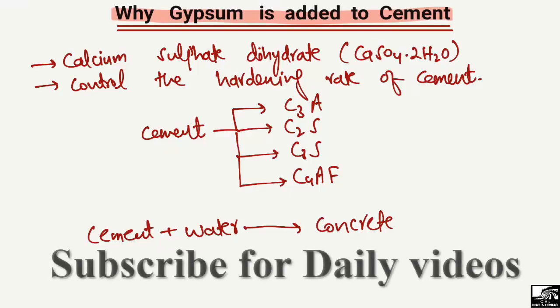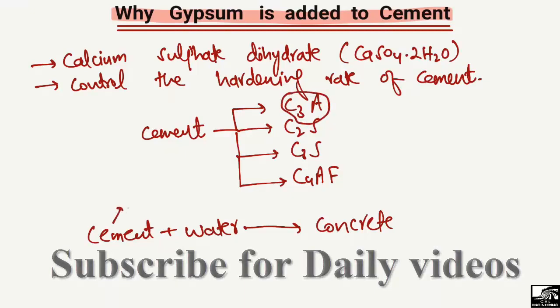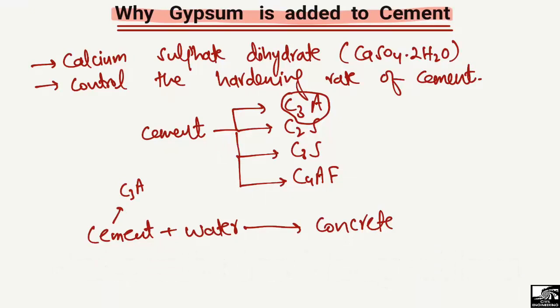After the addition of water to the cement, the cement hardens very quickly. This is because of the C3A component in the cement — tricalcium aluminate causes rapid hardening with the addition of water. To address this, we add gypsum in the production process of cement, around five percent by amount.